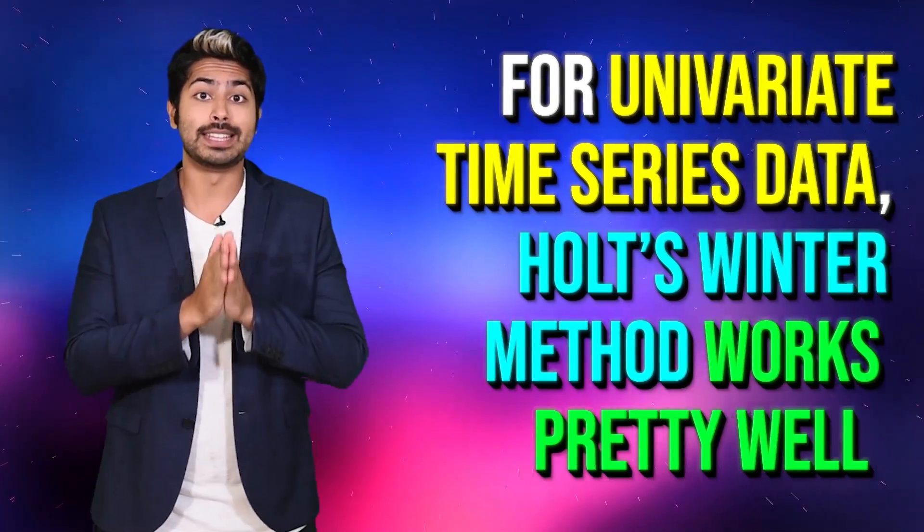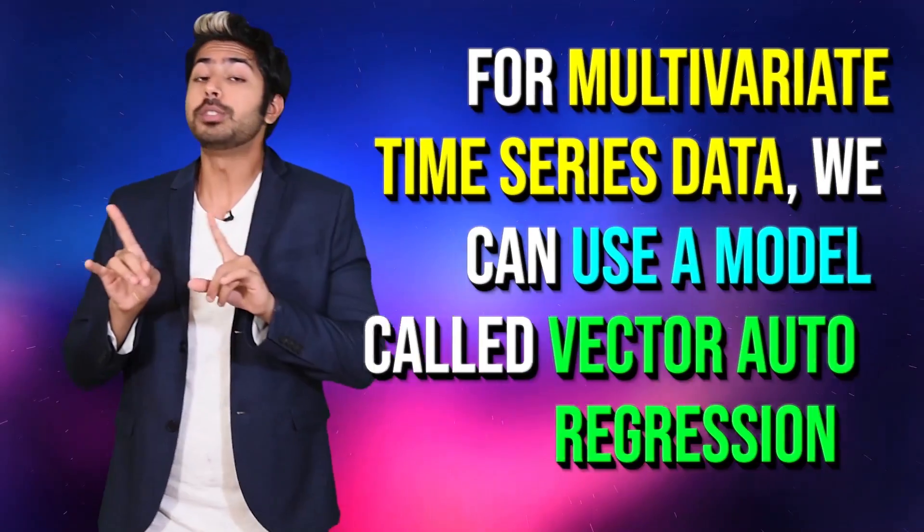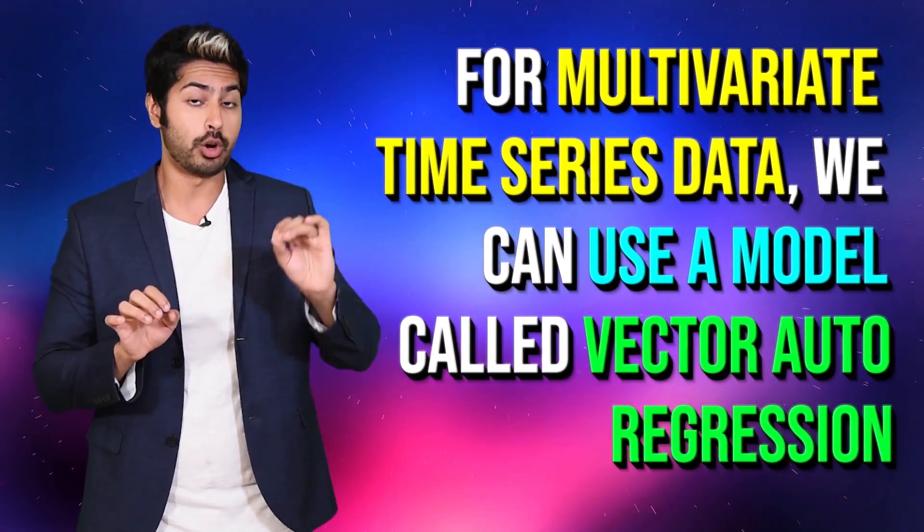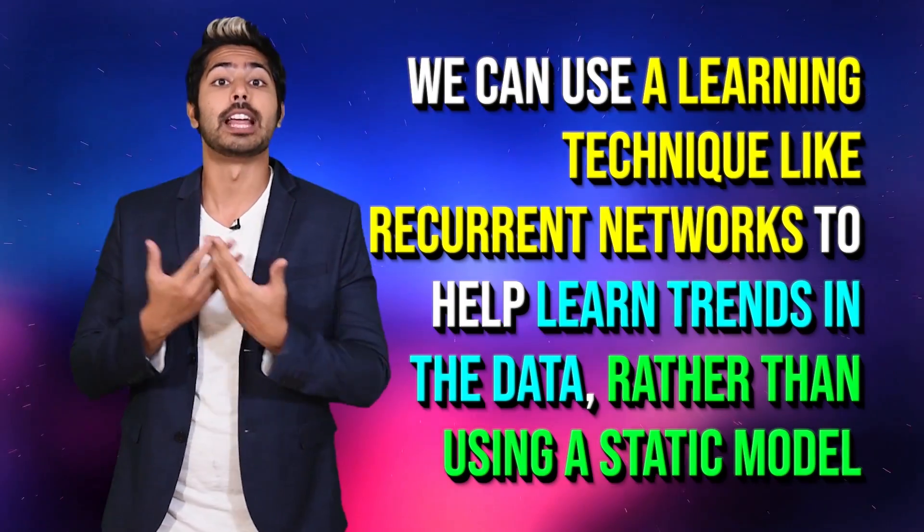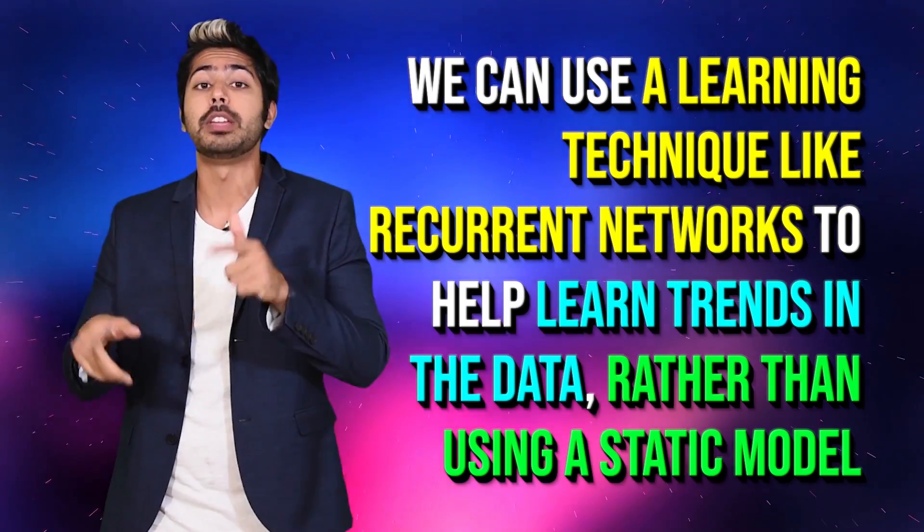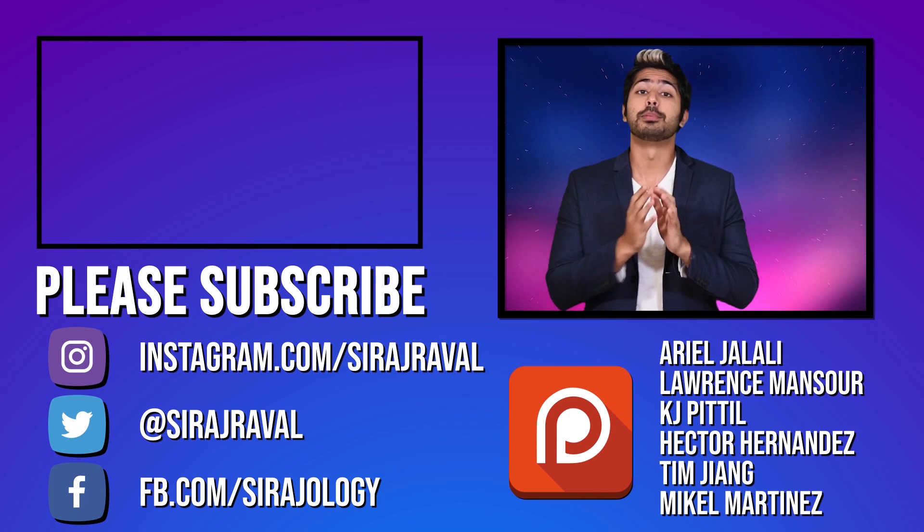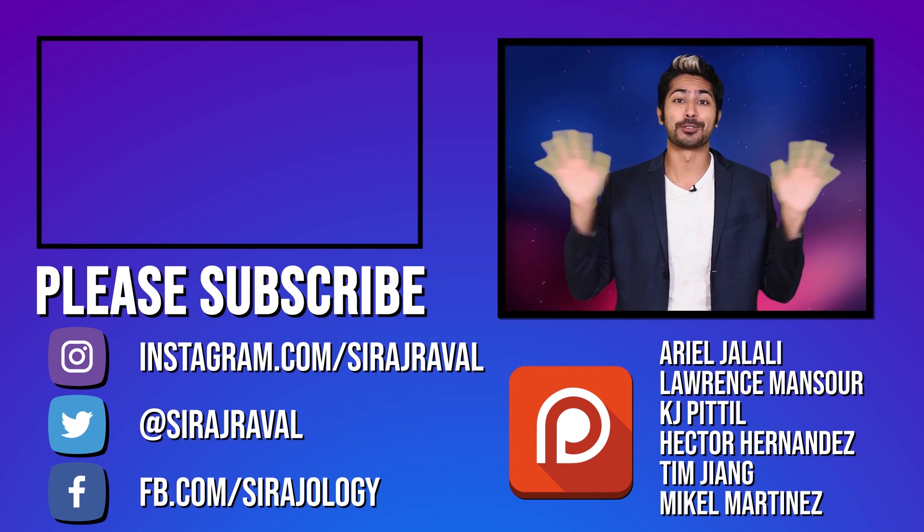There are three things to remember from this video. For univariate time series data, Holt's winter method works pretty well. For multivariate time series data, we can use a model called vector autoregression. And if we're feeling ambitious, we can use a learning technique like recurrent networks to help learn trends in the data, rather than using a static model. I'm so proud of you for making it to the end. Please subscribe for more programming videos. And for now, I've got to go forward in time. So, thanks for watching.